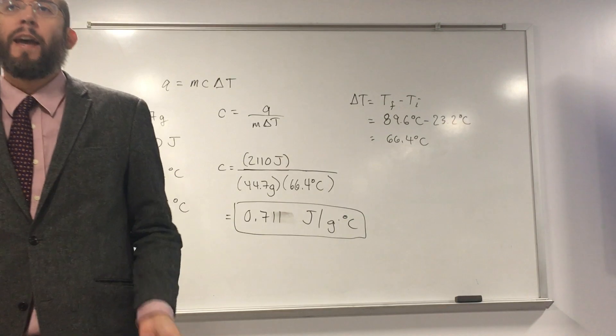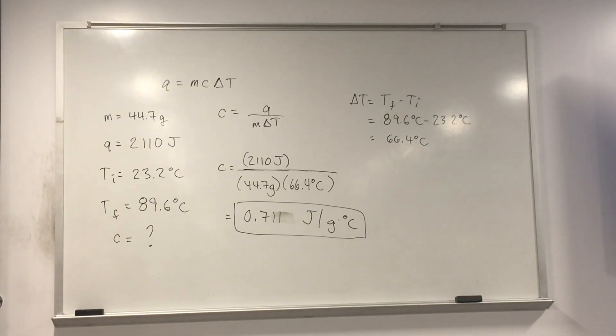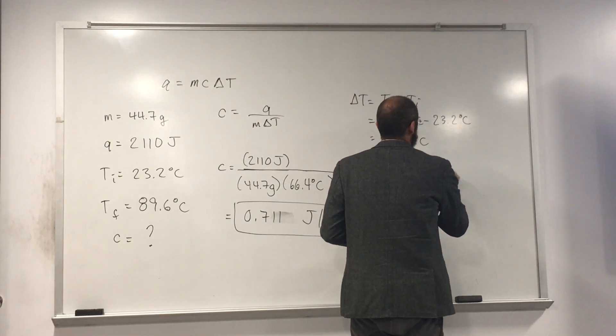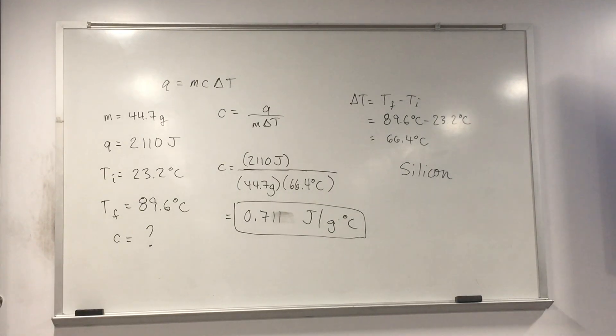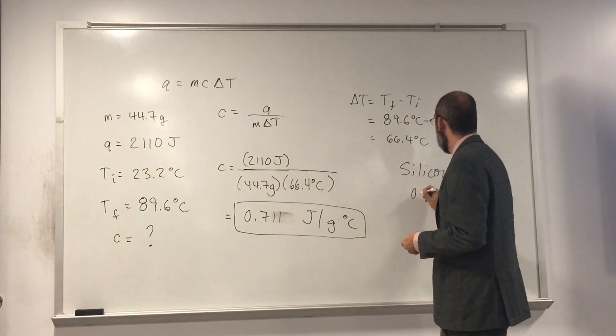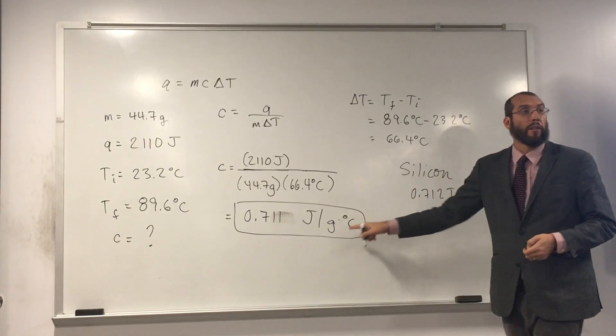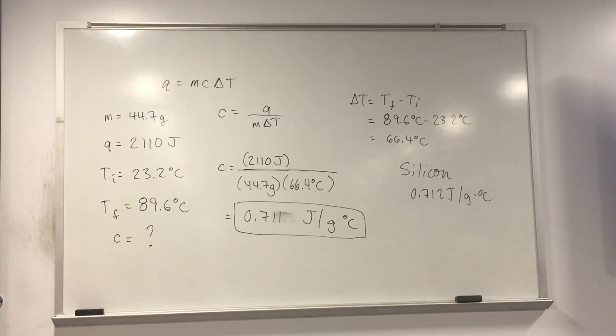And does that match any of the substances that we found on the table? It's close to silicon. So yeah, how close is it to silicon? Let's go back and look at the table. So at 0.712 joules per gram degree Celsius, we can pretty much say those are the same substance if we're comparing to the table. Is everybody okay with what we've done there?